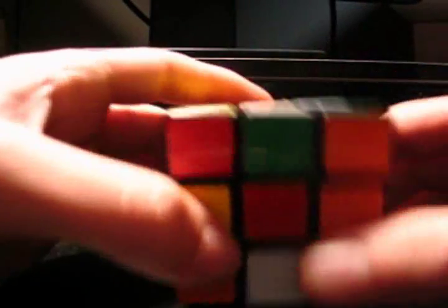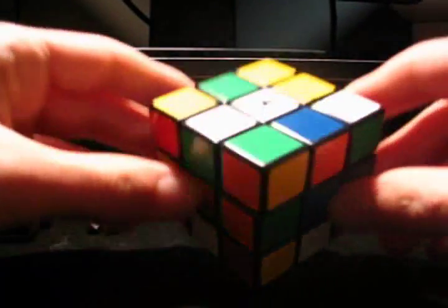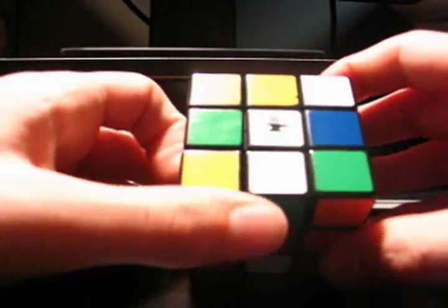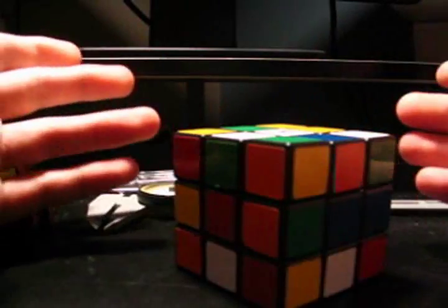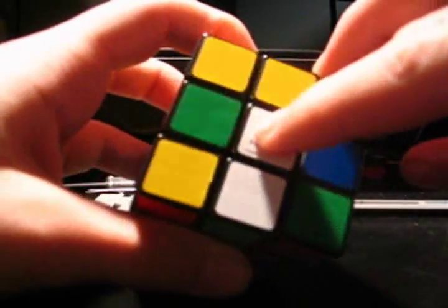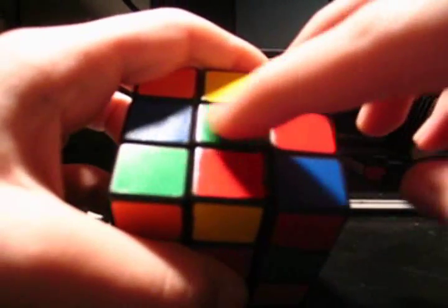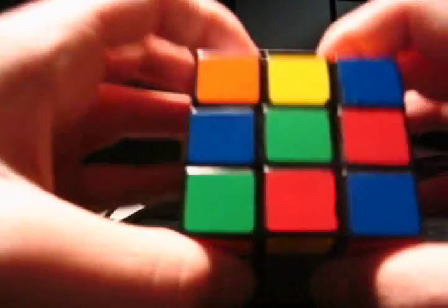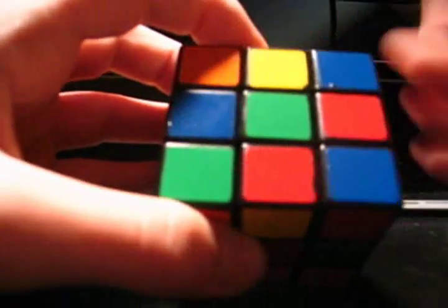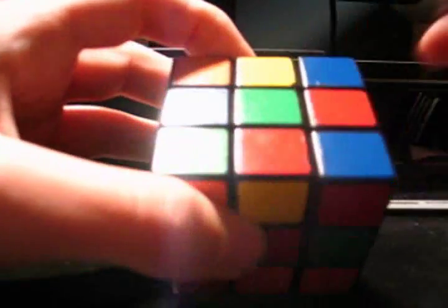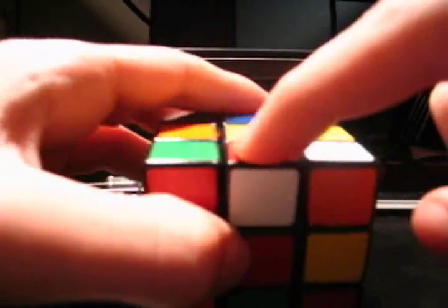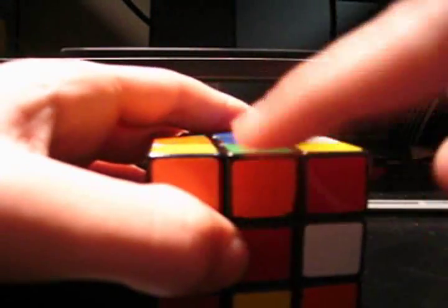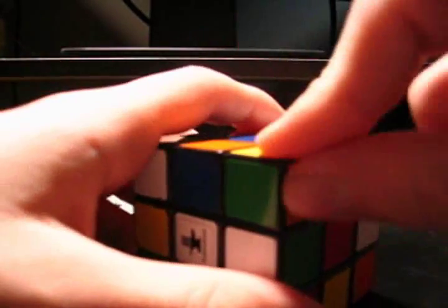Alright, so I've got my scrambled cube. I'm going to be referring to things in certain ways. Pretty simple, this piece here is the center. You can't change where they are relative to the core because they're attached. This is an edge, edges have two colors. This is a corner, corners have three colors.